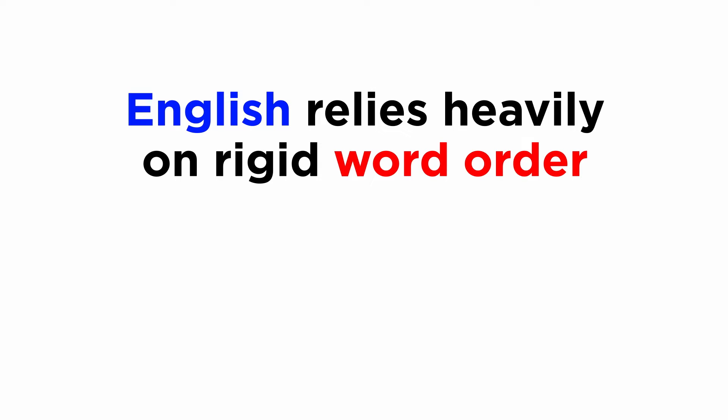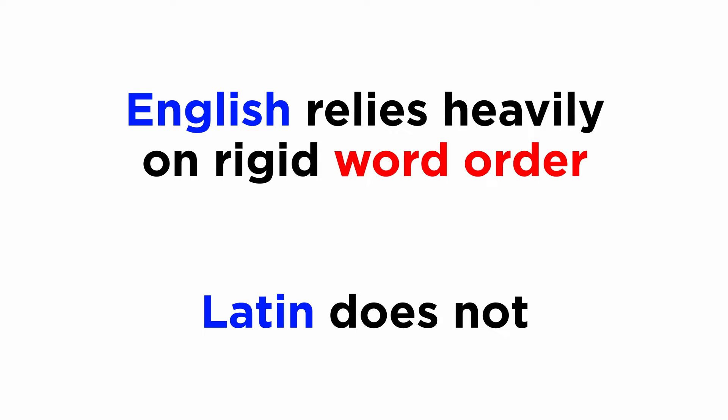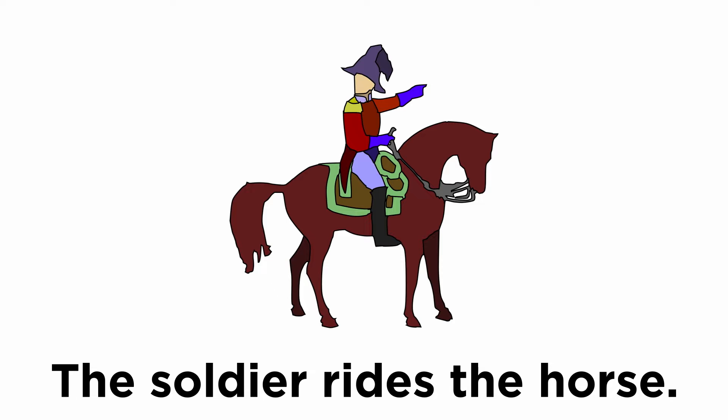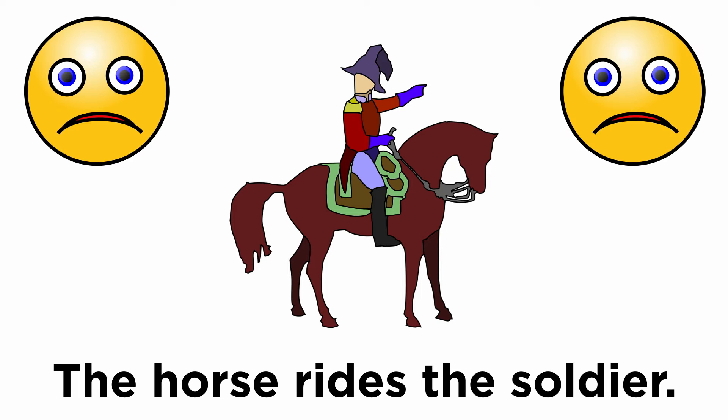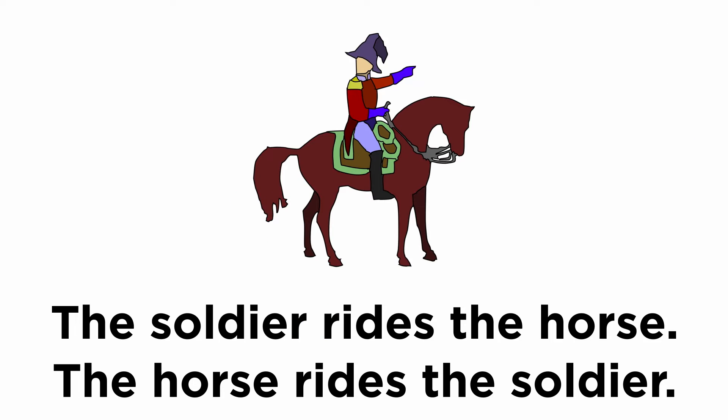To compensate for the loss of a full system of inflection, English must rely on a rather rigid order of words in order to make sentences totally clear, while Latin finds this completely unnecessary. Look at the following examples. English says 'The soldier rides the horse.' If I said 'The horse rides the soldier,' that would be ridiculous and totally change the sentence. But in Latin, we can do precisely that.